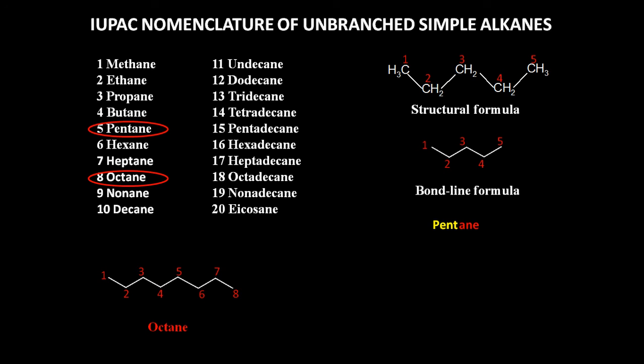Now let us look at a slightly longer chain. We can give numbering to each and every carbon atom: 1, 2, 3, 4, 5, 6, 7, 8, 9, 10 and 11. The total number of carbon atoms is 11, so the IUPAC name will become undecane.